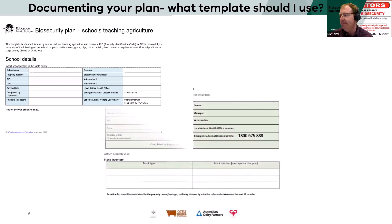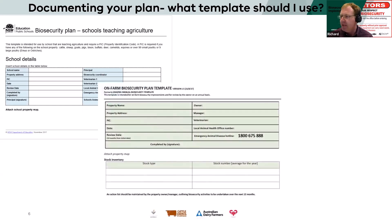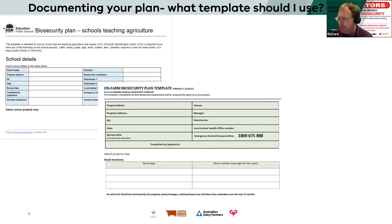The next common one is the On-Farm Biosecurity Plan template — this is the 2017 edition, the most recent edition. Very similar cover page and material; it breaks down into six to seven different areas.